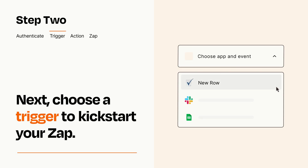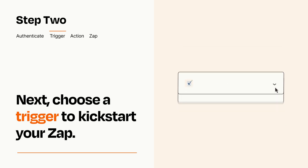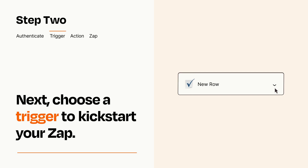Now let's set up your trigger, which is the event that starts your Zap. Pick the trigger event that you want from the list. When you set up this step, your Zap will pull in test data from your trigger app that you'll see later when setting up your action app.